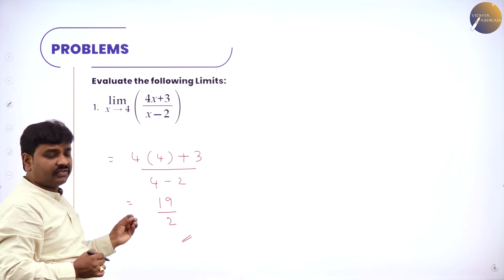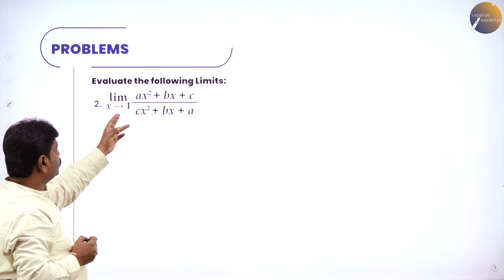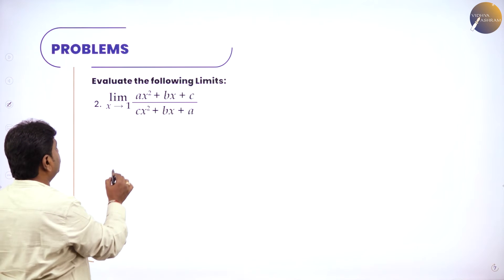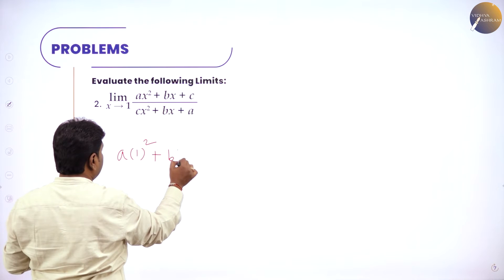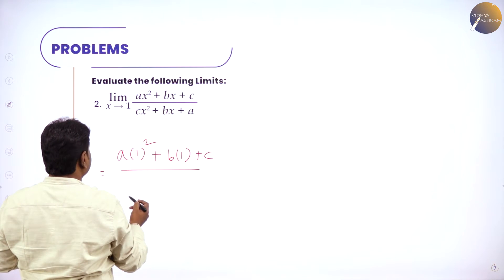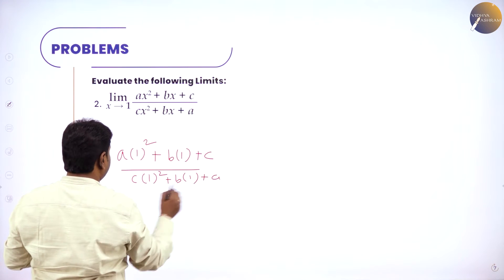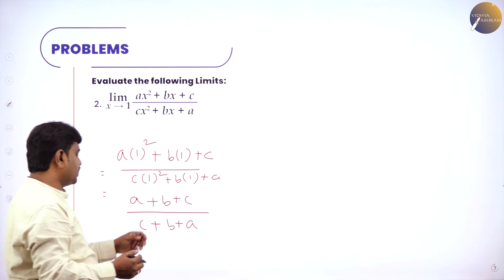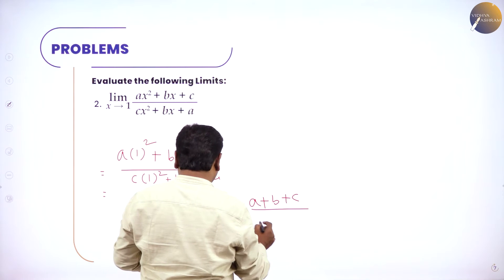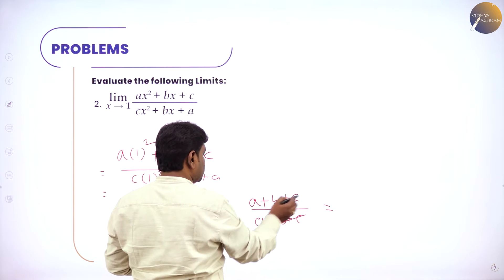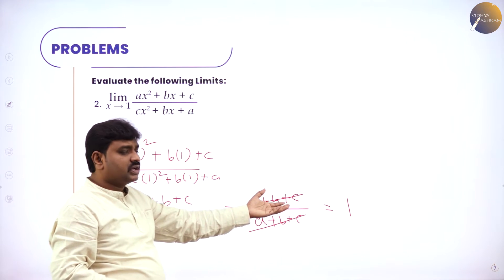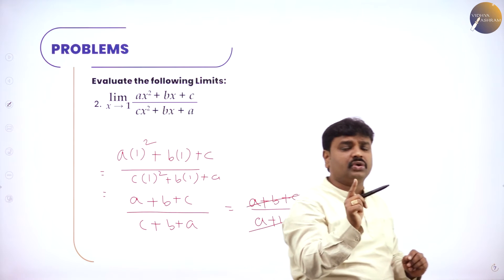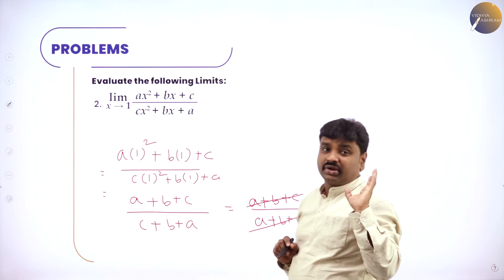Since addition is commutative, the denominator c plus b plus a can be rearranged as a plus b plus c. So numerator and denominator are both a plus b plus c, they cancel, giving 1. The answer is 1, which is a finite value. You should not get 0 by 0, infinity by infinity, 0 power 0, or infinity minus infinity — these are all indeterminate forms. When you apply limit, strictly you should not get indeterminate.